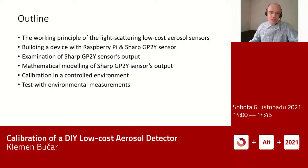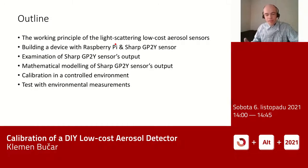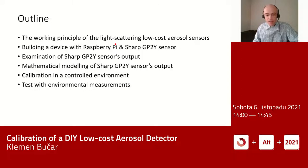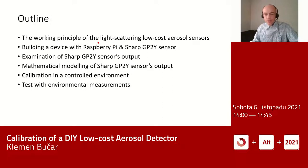This is the outline of my talk. I will start by explaining the working principle of light scattering low-cost sensors. Then I will describe how we built a simple do-it-yourself aerosol monitor using Raspberry Pi and one of the low-cost sensors. I will show how we struggled with the incomplete manufacturer's documentation, then show my analysis and modeling of the sensor output, the calibration in a controlled environment, and finally how we used it in environmental measurements.